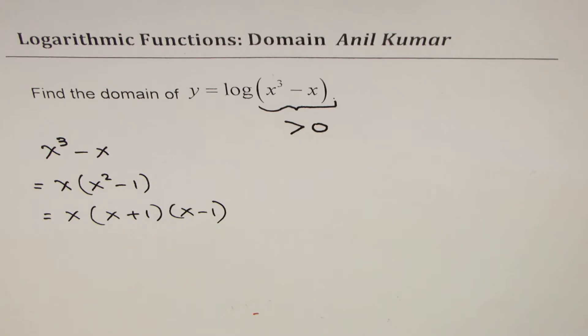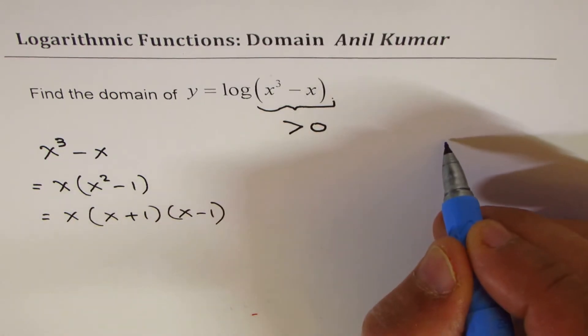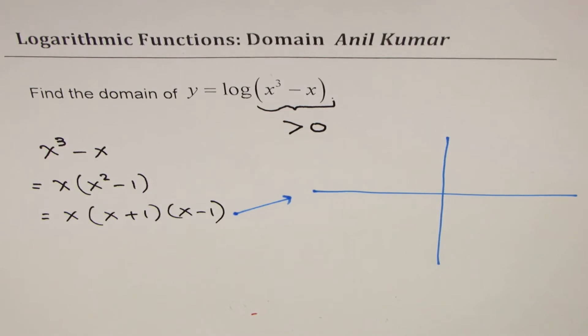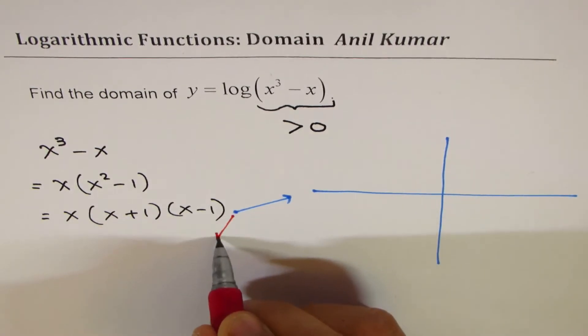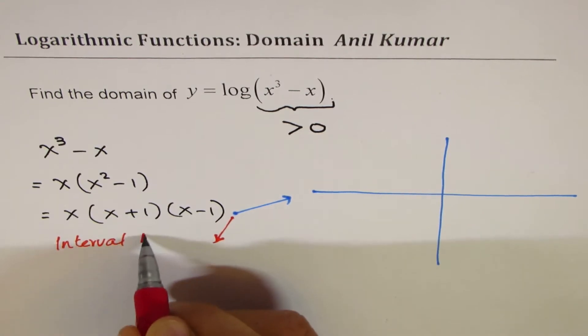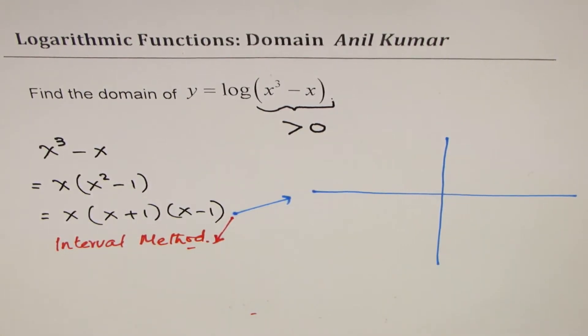Now, you could do interval method of finding the intervals where this is positive, or you could sketch it. So there are two options from here. One option is to sketch, the other option is use interval method. We'll go with the first option to sketch the function.